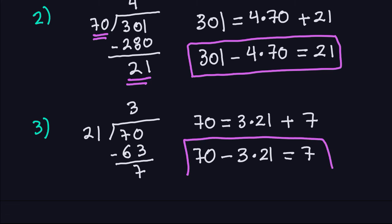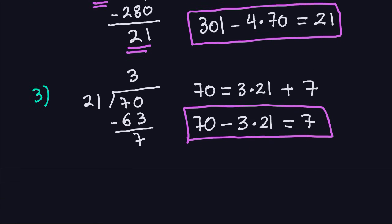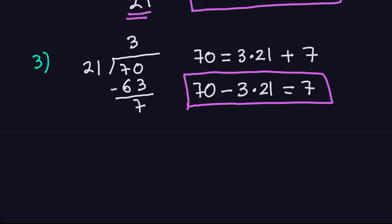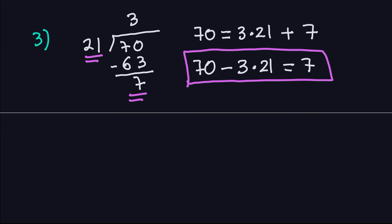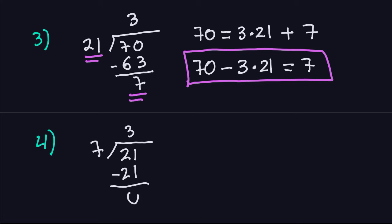Now finally we'll get zero. I take 21 and divide it by 7. 7 goes into 21 three times, and 7 times 3 is 21, so subtracting gives me zero. Once you get zero, the previous remainder is the GCD. So in this case, the GCD is 7 — that's the greatest common divisor between the original numbers.